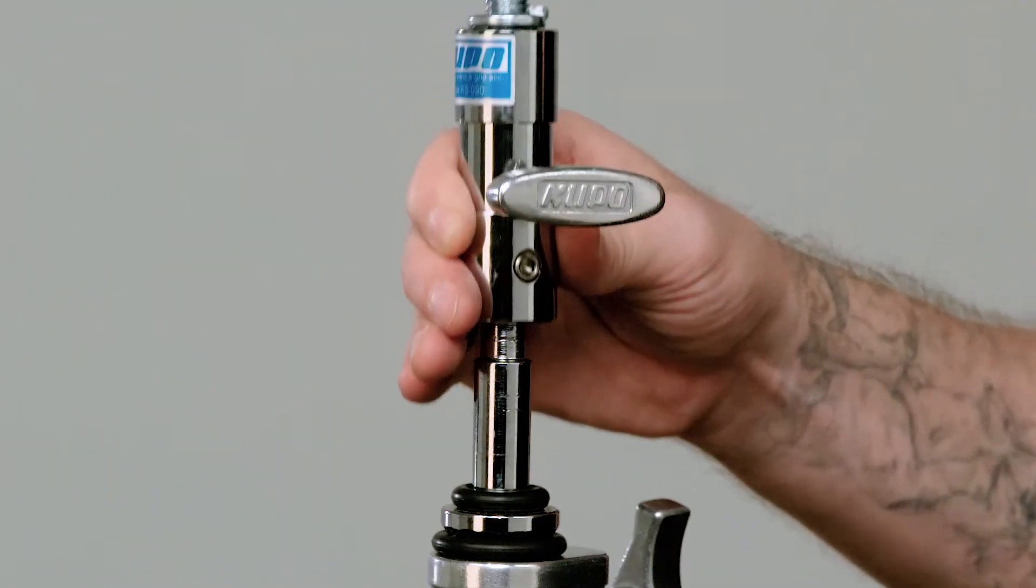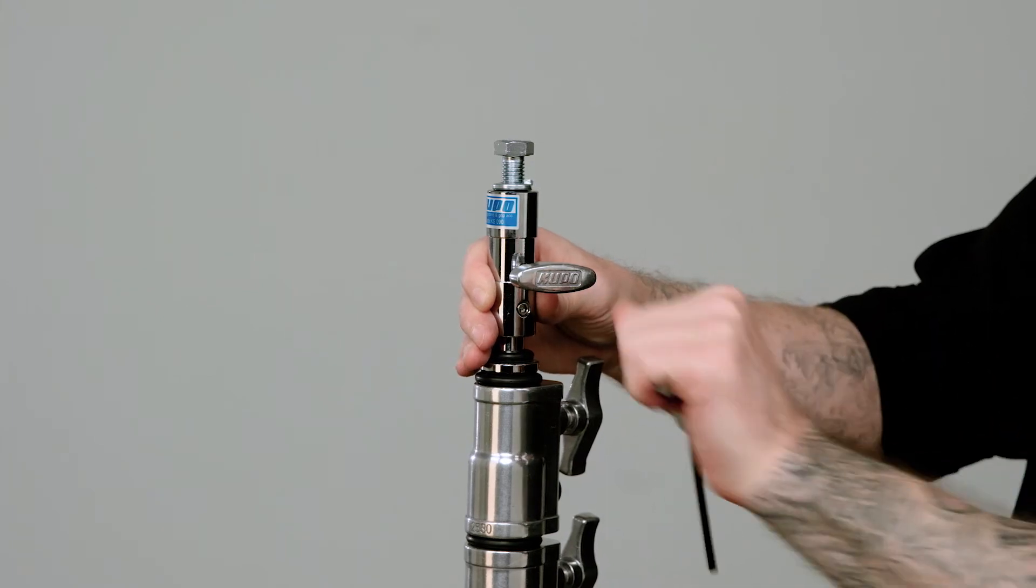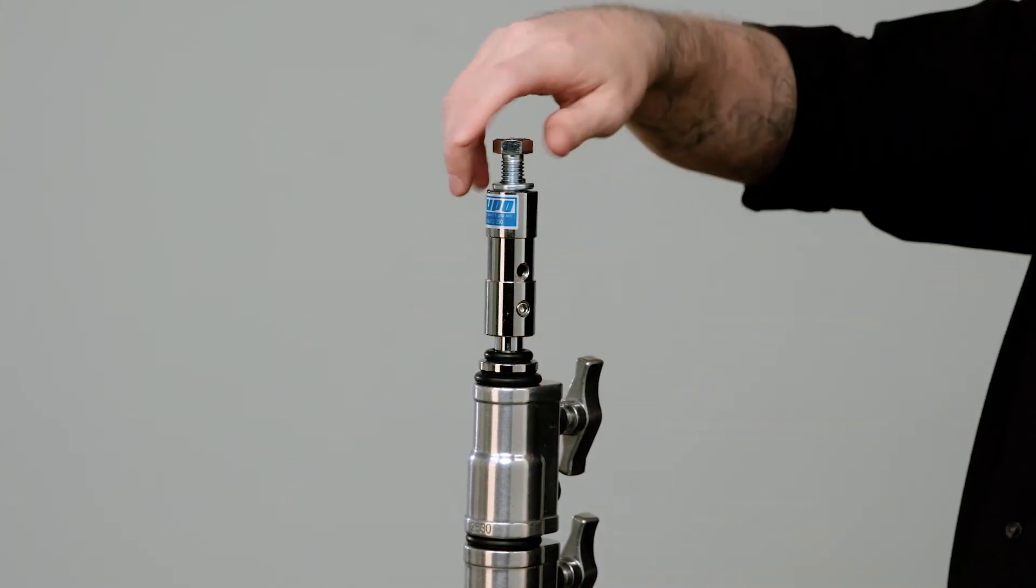Alternatively, you can convert a baby 5/8 inch to a junior 1 1/8 inch pin via the hex screw.